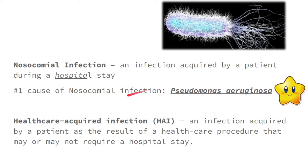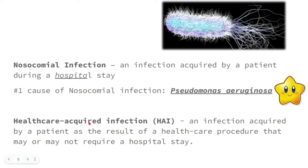Aside from nosocomial infection, we also have healthcare-acquired infection (HAI) — an infection acquired by a patient as a result of a healthcare procedure that may or may not require a hospital stay, but definitely involves a healthcare procedure. The key difference: nosocomial infection is specifically acquired in the hospital, while healthcare-acquired infection can be acquired anywhere due to a healthcare procedure. The number one cause of nosocomial infection remains Pseudomonas aeruginosa.